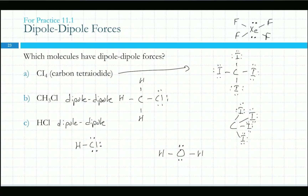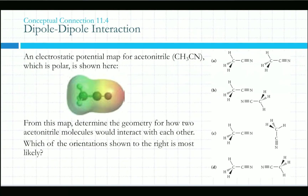Use the Lewis dot structure to determine geometry. Lewis structures can be drawn many ways, so don't trust the drawing to tell you about polarity directly — use it to count bonding groups and lone pairs. For example, water drawn flat hides the fact that it's bent and therefore polar. Xenon tetrafluoride is square planar with lone pairs opposite each other, canceling out — so it's nonpolar. B and C from the previous question had dipole-dipole forces.